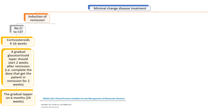Let's start the approach for the management of minimal change disease, beginning with induction of remission. The drug of choice is corticosteroid. If the patient has no contraindication, they will receive corticosteroids for a minimum of 4 weeks and a maximum of 16 weeks. If the patient enters remission, a gradual glucocorticoid taper should start 2 weeks after remission. The gradual taper of glucocorticoids will be over 24 weeks.